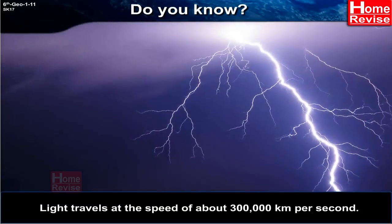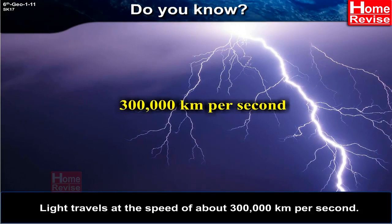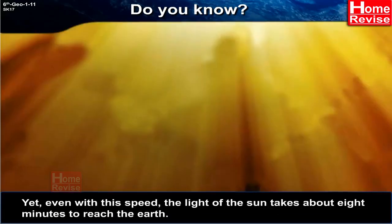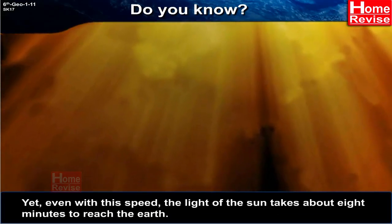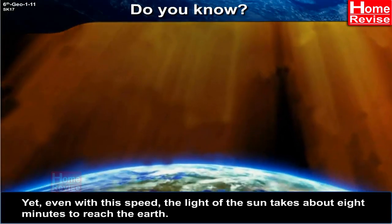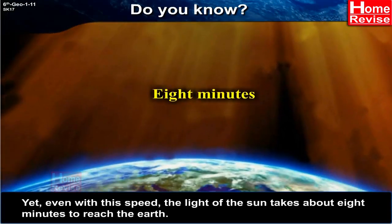Light travels at the speed of about 3 lakh km per second. Yet, even with this speed, the light of the Sun takes about 8 minutes to reach the Earth.